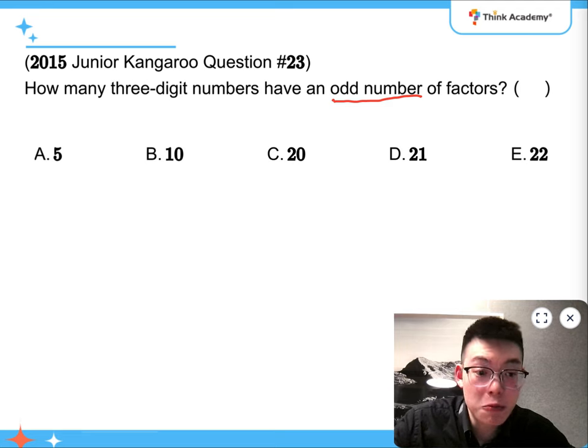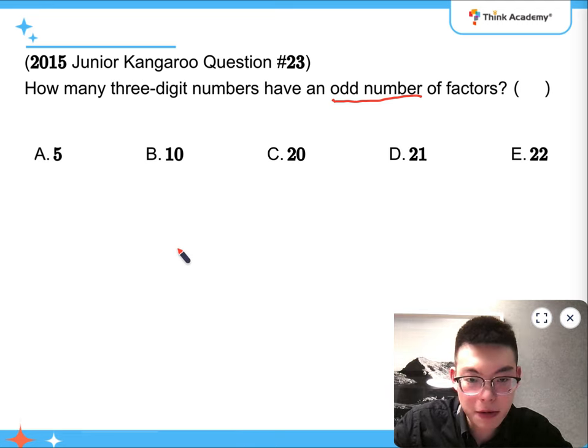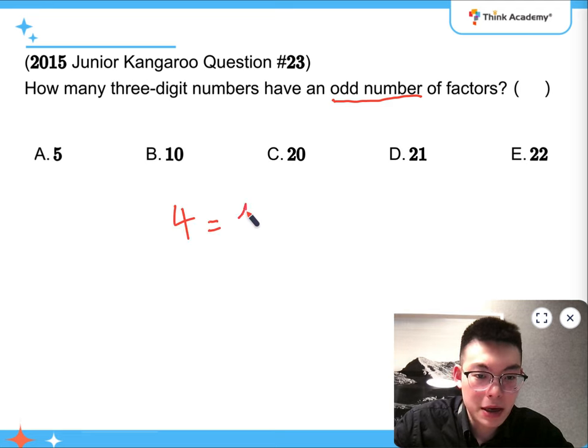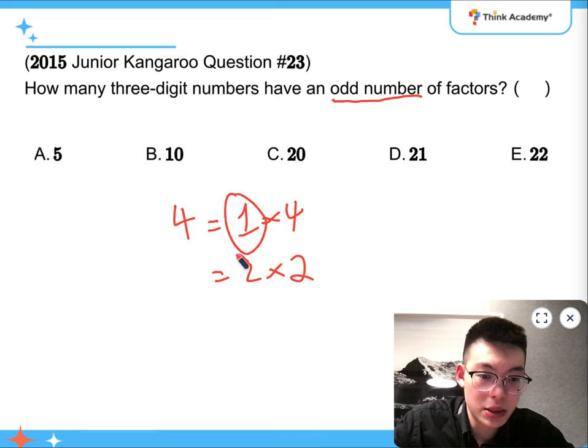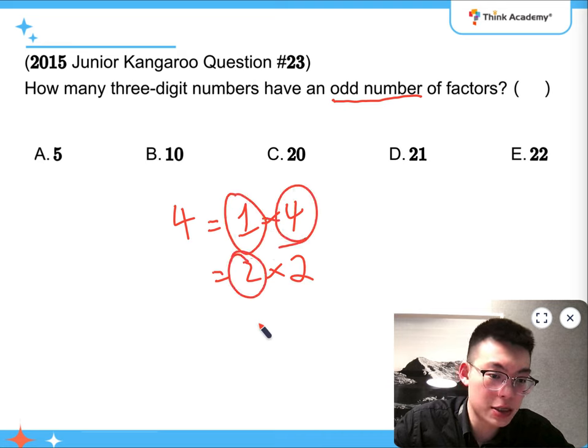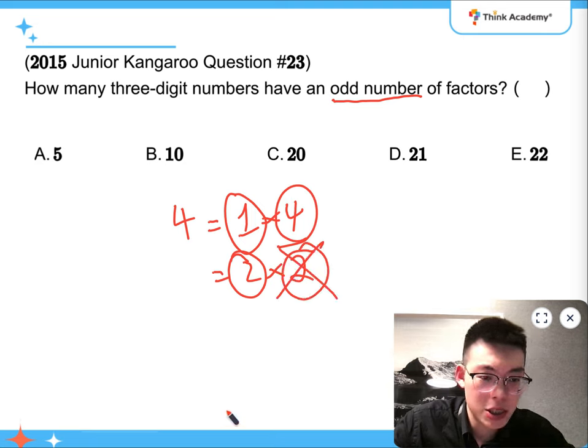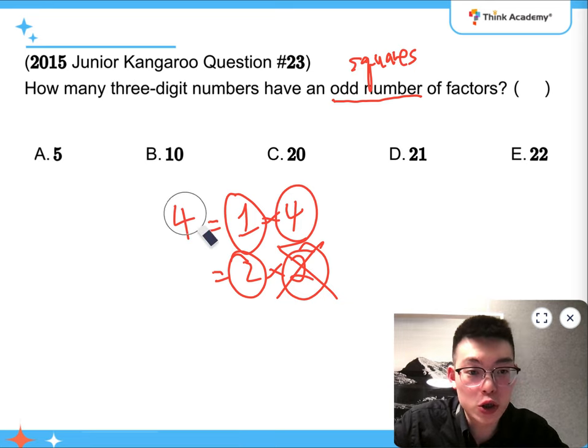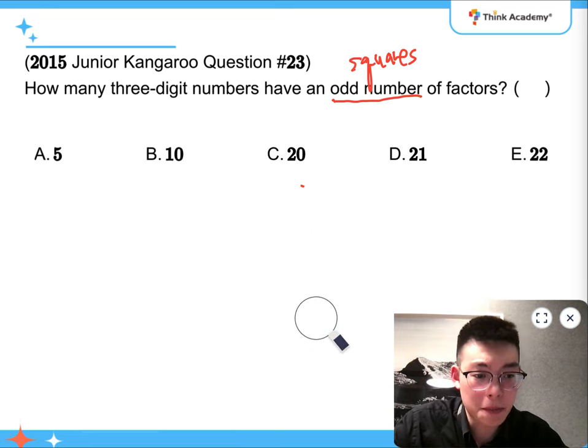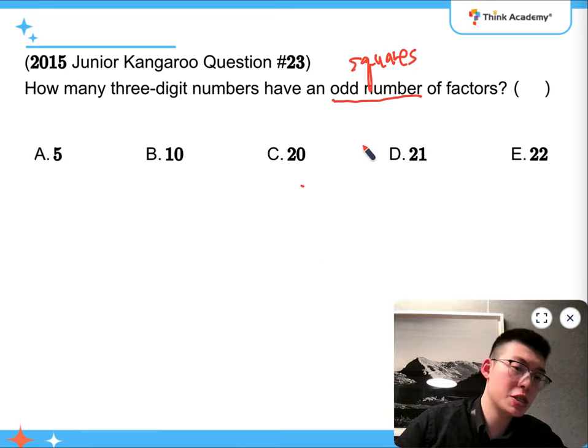It's only when I have a repeating pair. So for example, 4. It has 1 times 4 and 2 times 2. So it has 1, 2, 3 factors, because the repeating pair is not counted twice. So what does it mean? It means that only square numbers have odd number of factors.